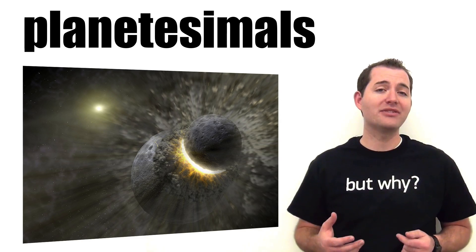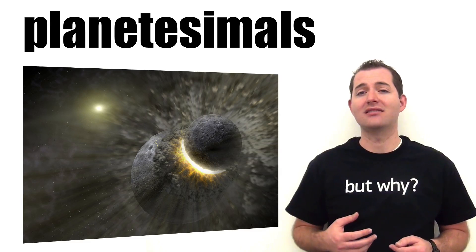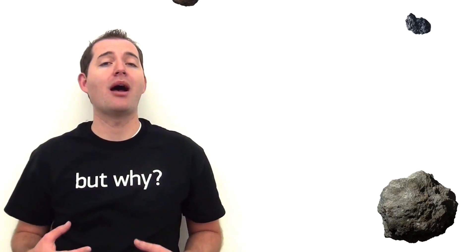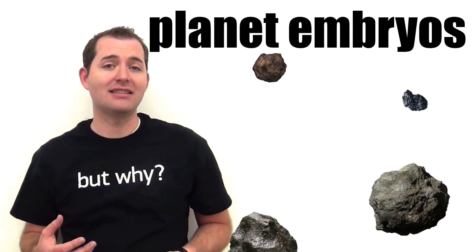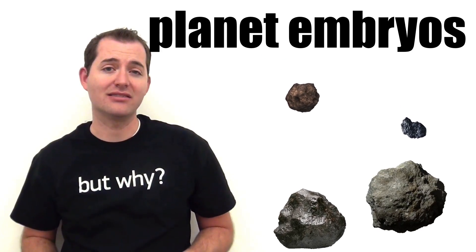Planetesimals are kilometer-sized objects orbiting the central star. These planetesimals will continue to pull more mass towards them until they become about moon-sized or Mars-sized objects. These are known as planet embryos. This process can take between 100,000 and 300,000 years.